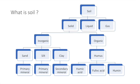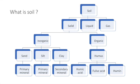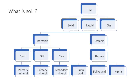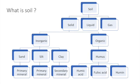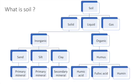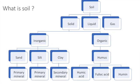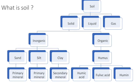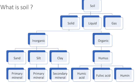We then come to the question: what is soil? Soil is a three-phase system — solid, liquid and gaseous. The solid phase can be further classified as inorganic and organic. The inorganic phase consists of sand, silt and clay, whereas the organic fraction consists of humus. Humus is further subdivided into humic acid, fulvic acid and humin, and it is in the inorganic fraction — sand, silt and clay — where primary and secondary minerals reside.